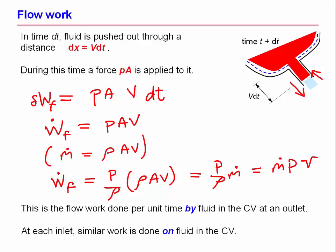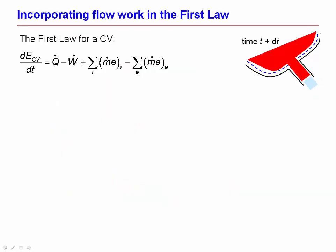Just to be very clear of what that is, it is the work that the red fluid does on the blue fluid at an outlet. And it works for an inlet as well, except that at the inlet, it's the outside fluid that is doing work on the fluid inside the control volume.